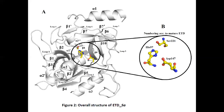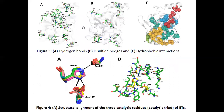We found that the structure of this enzyme is composed of various alpha helices and beta sheets, and the active site is present at the junction of the two beta-barrel domains. The active site is composed of three amino acid residues: histidine 97, serine 221, and aspartic acid 147.